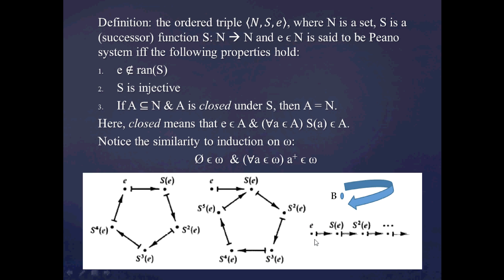And notice that it's certainly a subset of N — it's all the stuff in N minus this point b. It's certainly closed under s, yet it's not equal to N. So this third postulate is going to rule out Peano systems that look like this, where you just have these floating points being mapped to themselves.